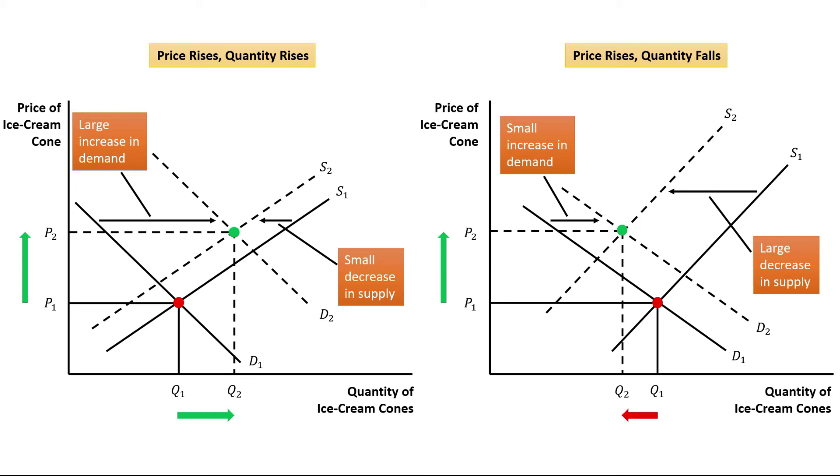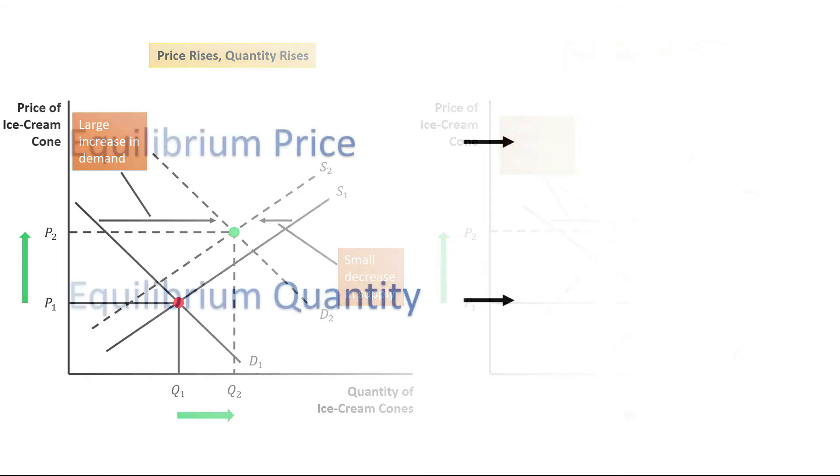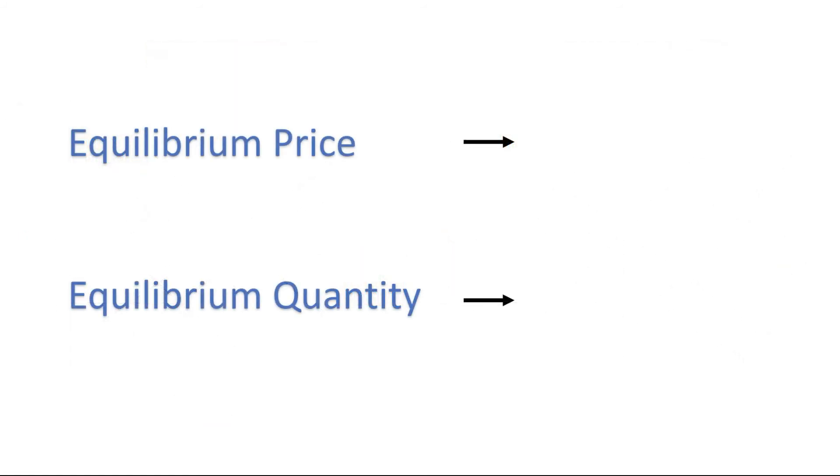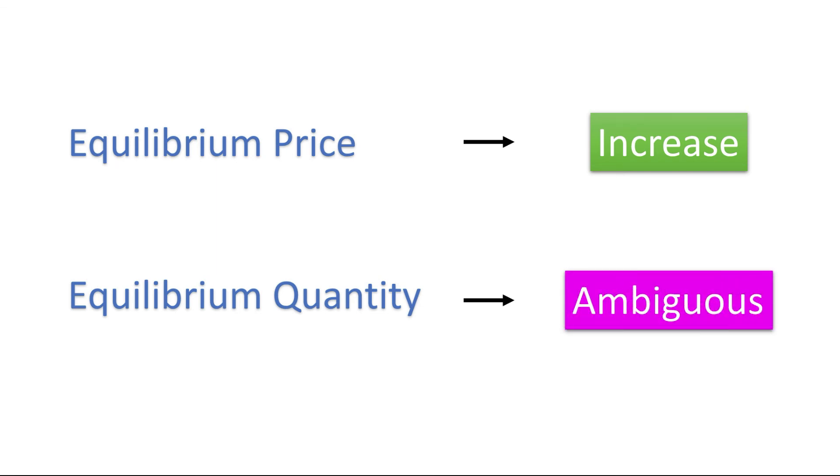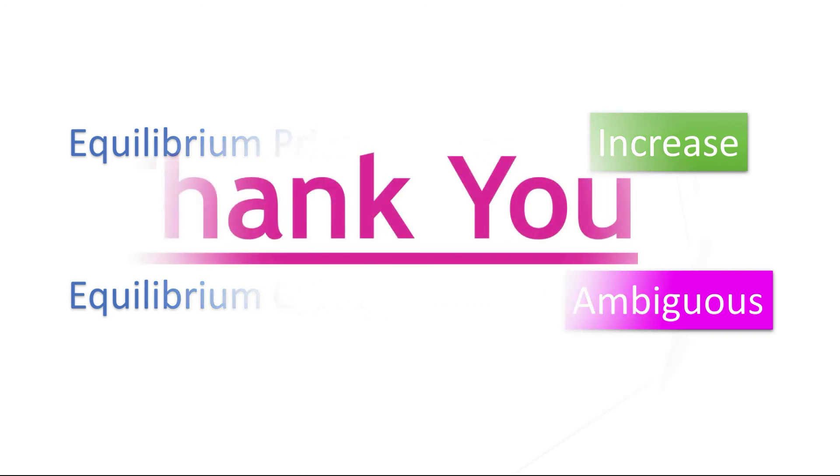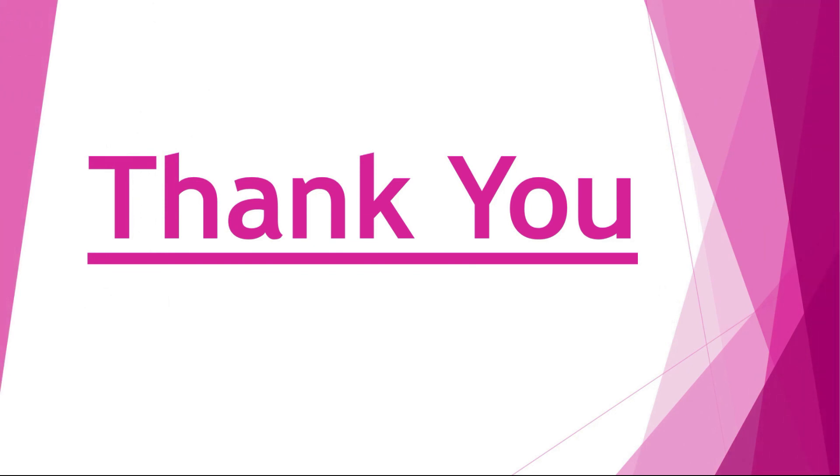So two possible outcomes might result depending on the relative size of the demand and supply shifts. So one thing is clear that equilibrium price will definitely increase. However, the change in equilibrium quantity is ambiguous. It could go either way. Thank you.